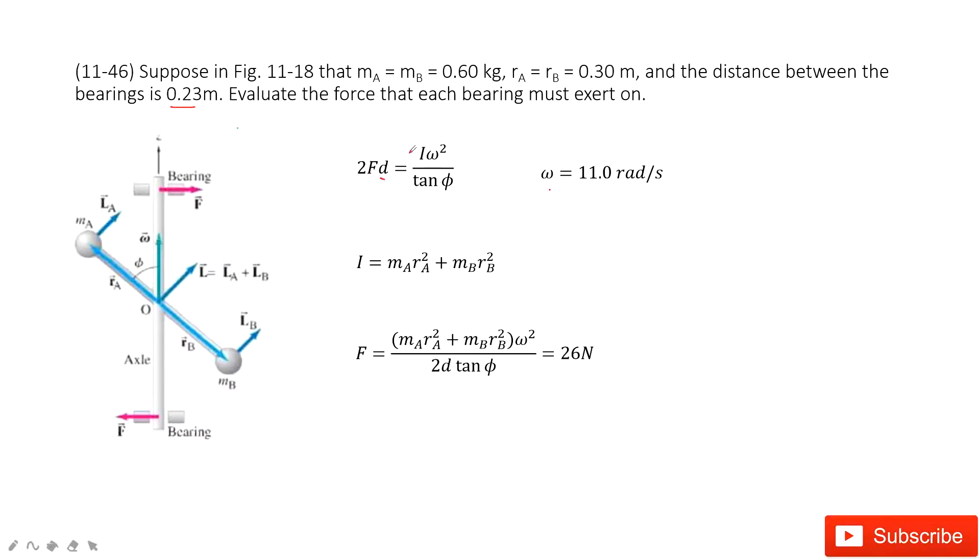So all these quantities are given. And then the next equation we need to find is I, the moment of inertia for this system. It is just mass A times r_A squared plus mass B times r_B squared.